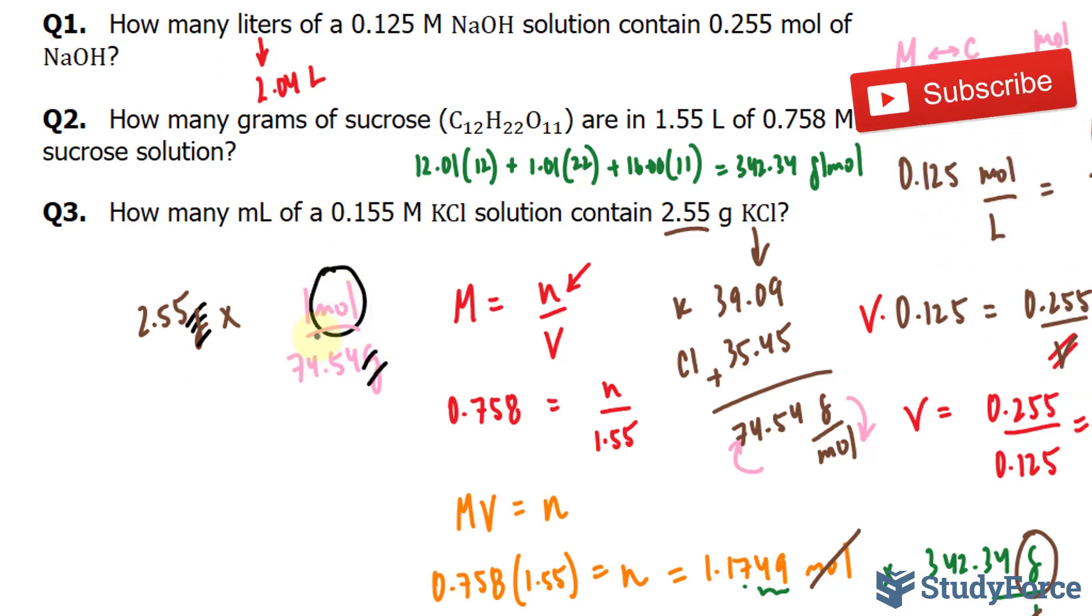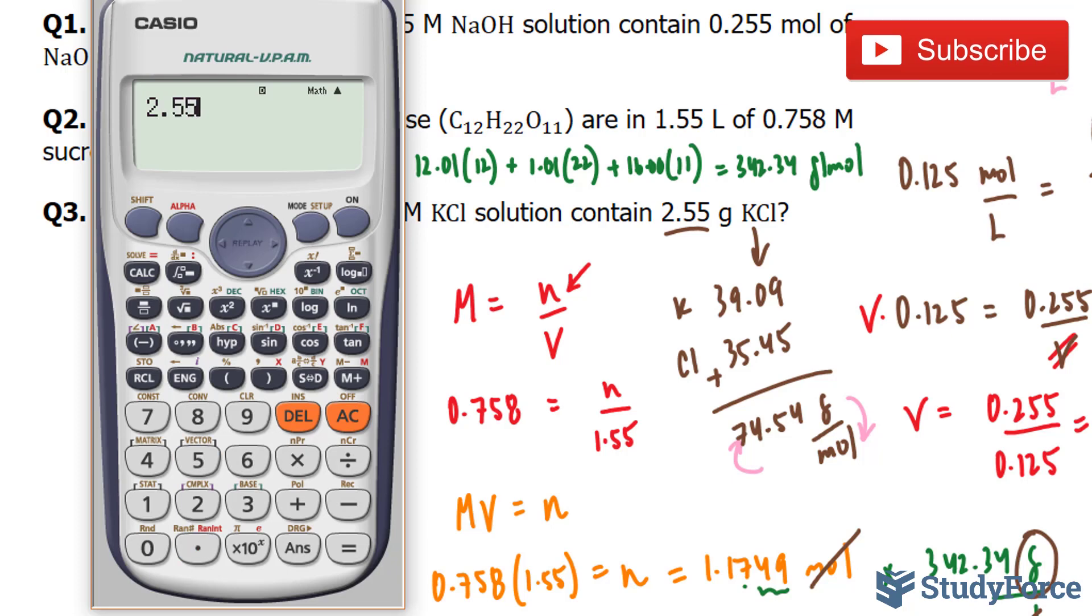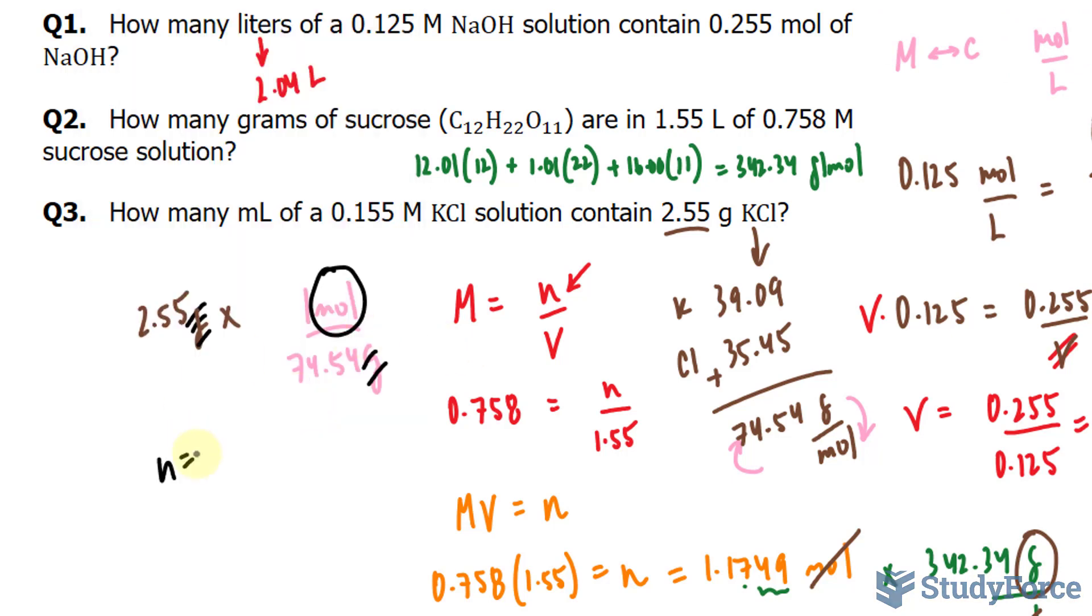So our mole count here is 2.55 divided by 74.54. This gives us 0.0342 moles.